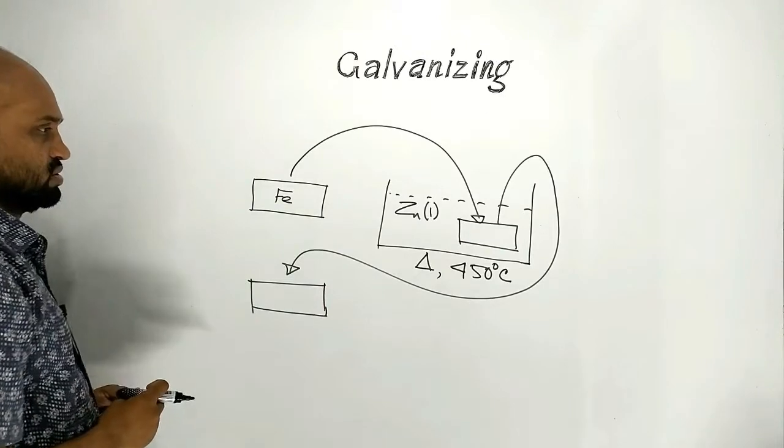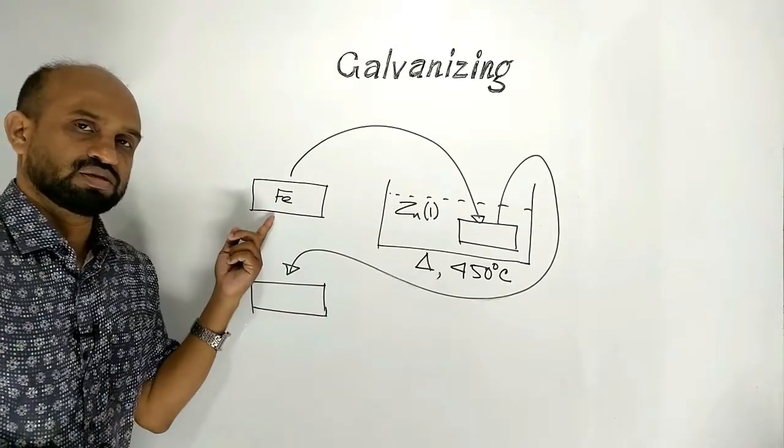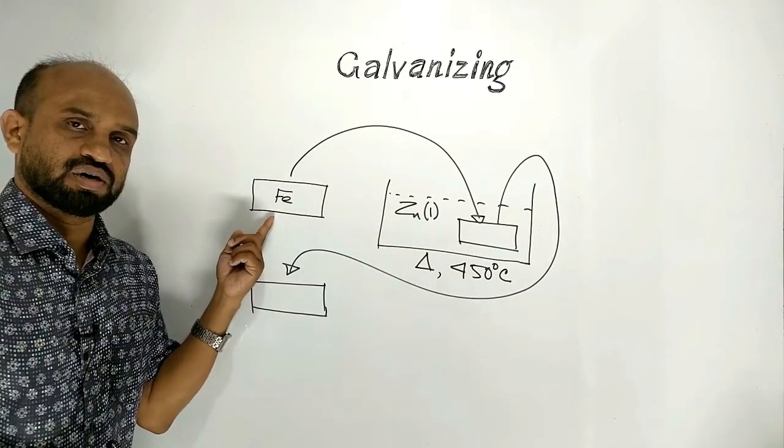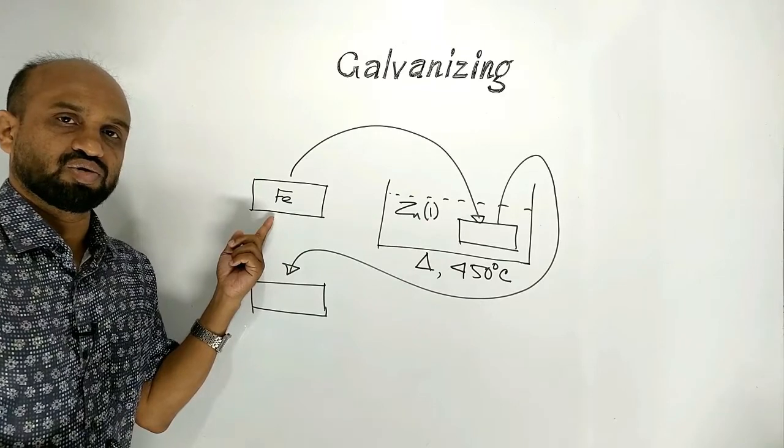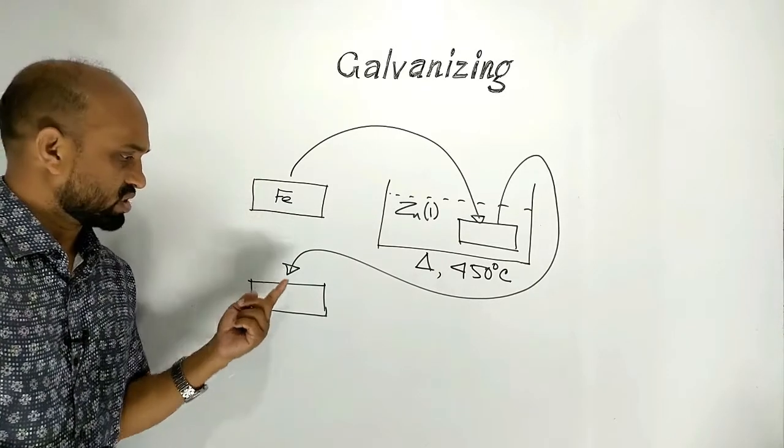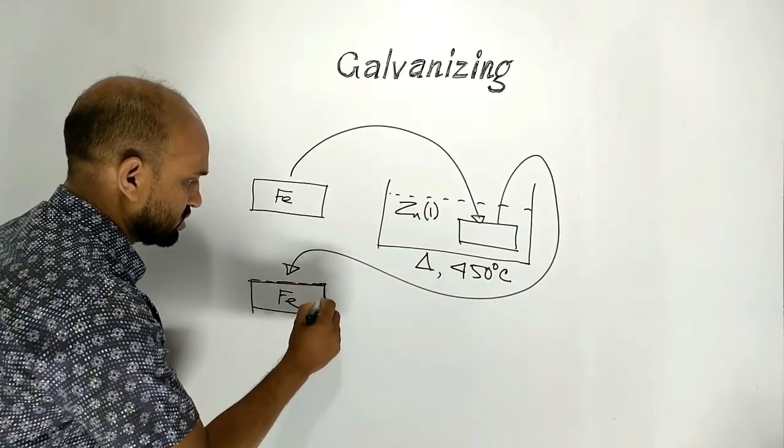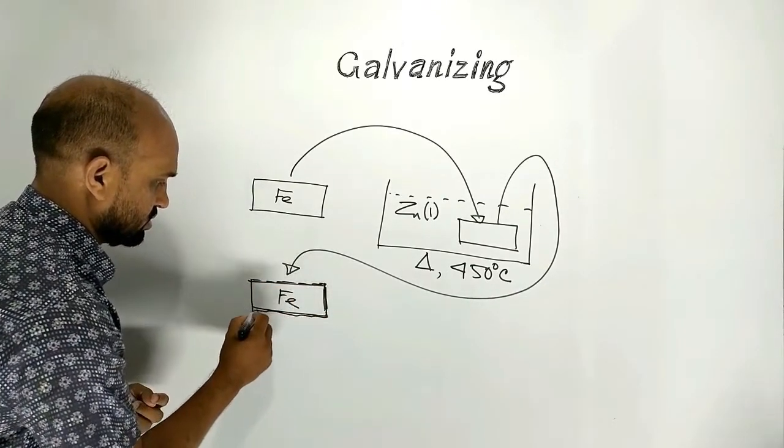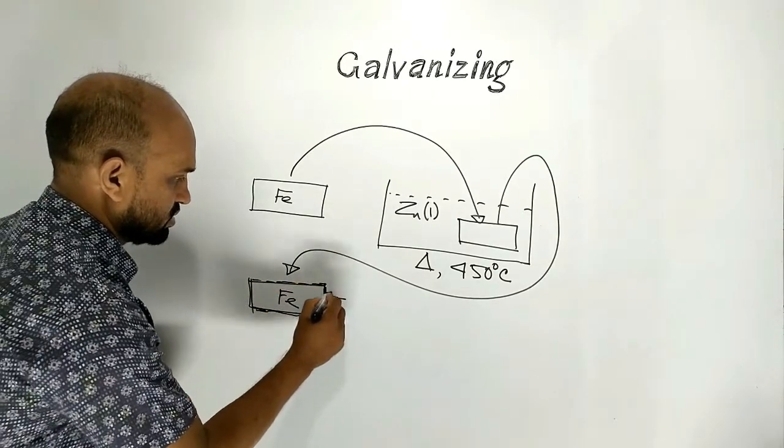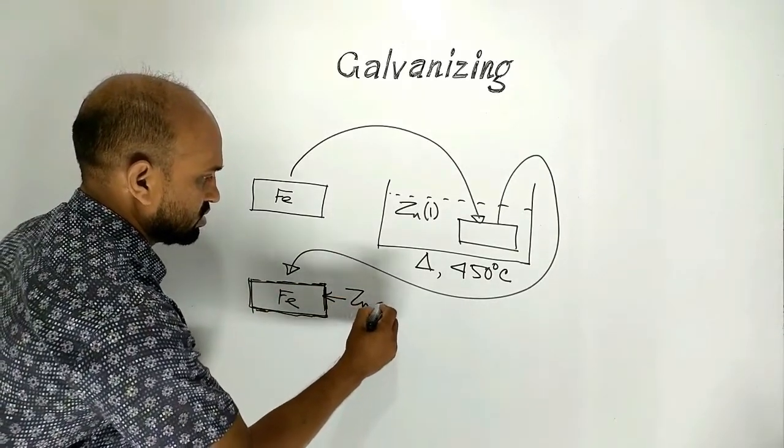Now this is an article of iron without any coating, but this one is coated with zinc. This is zinc coating.